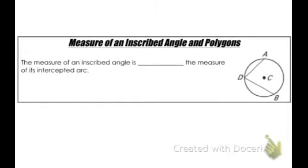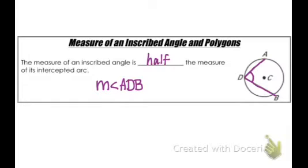The measure of an inscribed angle in polygons: the measure of an inscribed angle is half of the measure of its intercepted arc. And that can go backwards as well — the measure of an arc would be twice the measure of its inscribed angle.